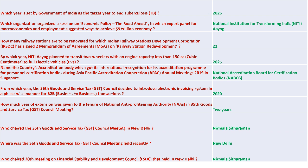2025 is the year when India wants to eradicate tuberculosis. NITI Aayog organized the economic policy conference 'The Road Ahead' to identify ways to achieve the five trillion dollar economy mark. 22 railway stations have signed memorandums of understanding to be renovated. NITI Aayog planned to transition two-wheelers with engine capacity less than 150cc to full electric vehicles by 2025, though there has been significant backlash from the manufacturing community.